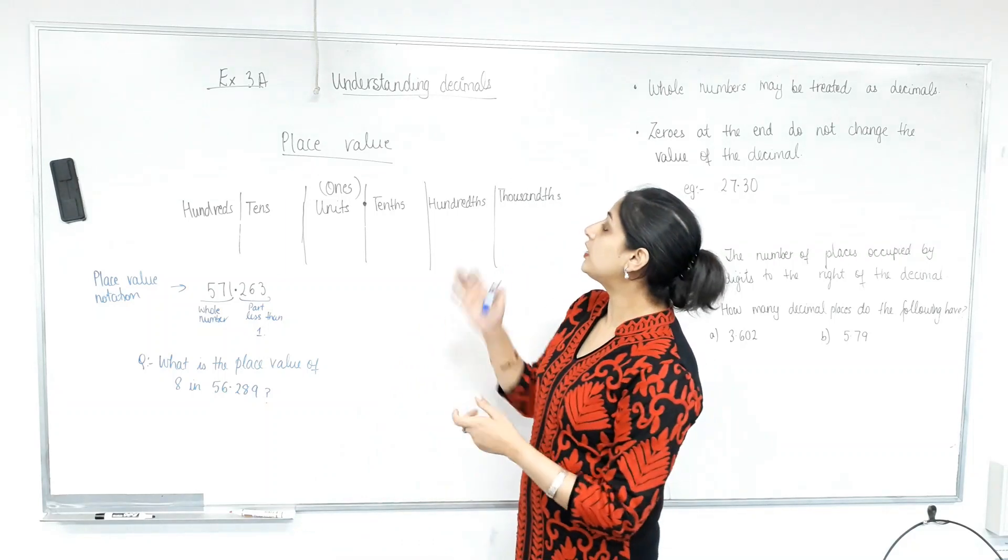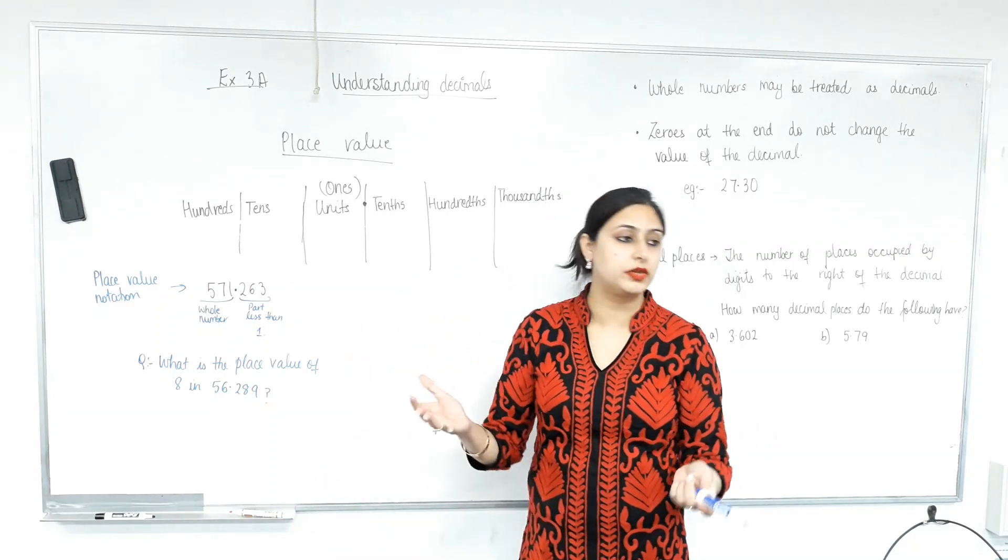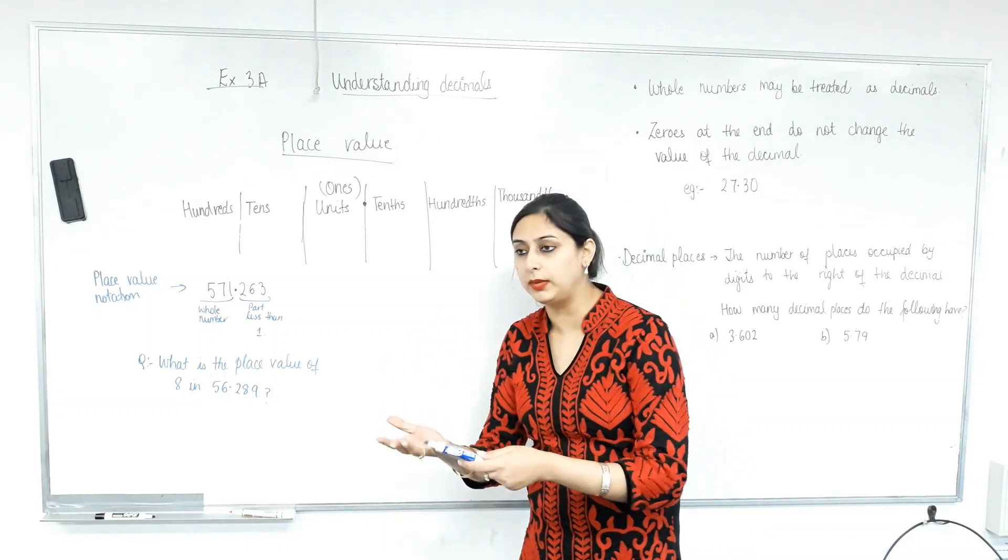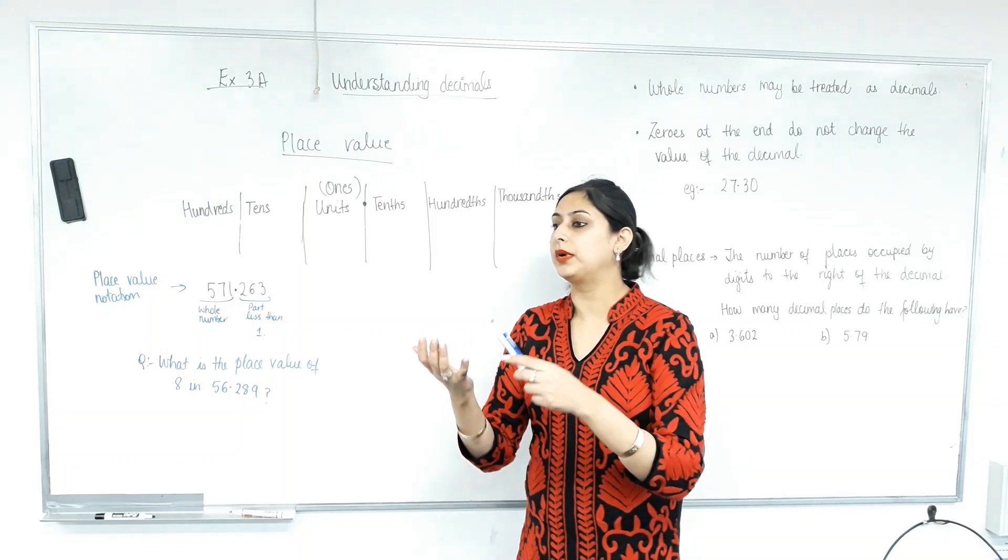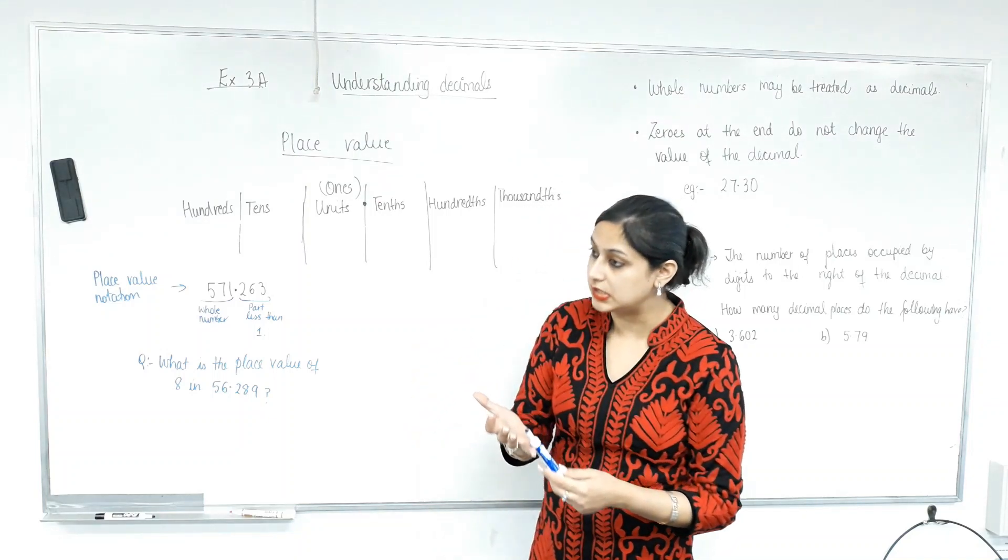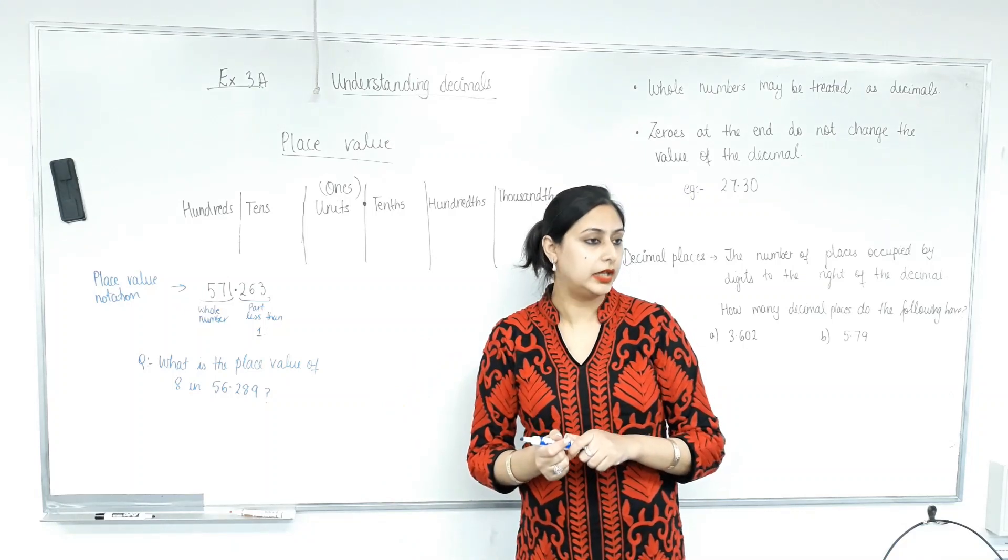All right, so without talking too much, wake up. Eyes on the board. Thank you. Let's understand what a decimal is. Yes, all the numbers are related one way or the other. We can write a number in a whole number form. If it doesn't have any parts less than one, we can write a number as a fraction. We can write a number as a decimal. And we can write something as a percentage as well. And they're all related.